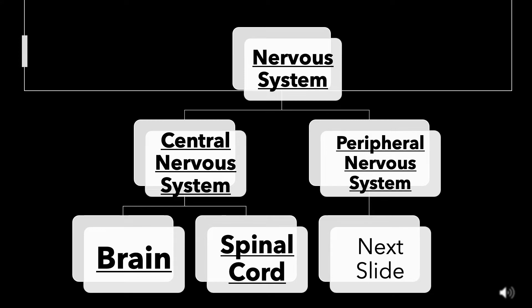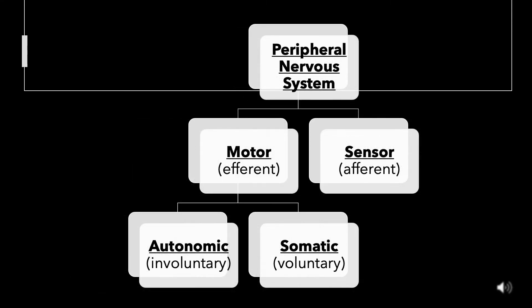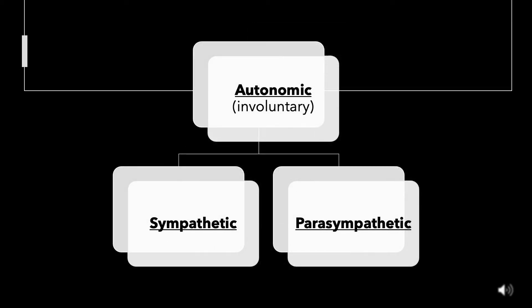Brain and Spinal Cord are the two main parts of CNS, or Central Nervous System. Peripheral Nervous System consists of Motor and Sensory Neurons. Motor neurons are further divided into Autonomic and Somatic Neurons. Autonomic Nervous System is further divided into Sympathetic Nervous System and Parasympathetic Nervous System.